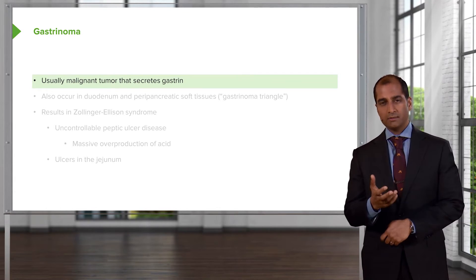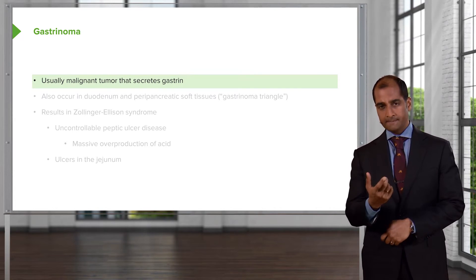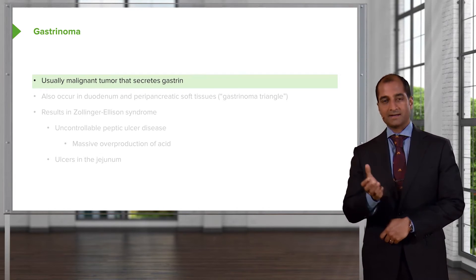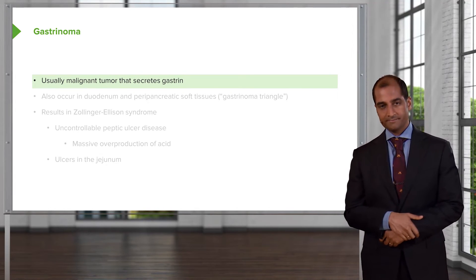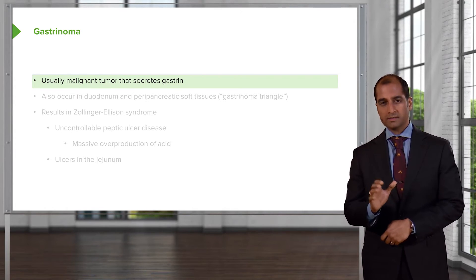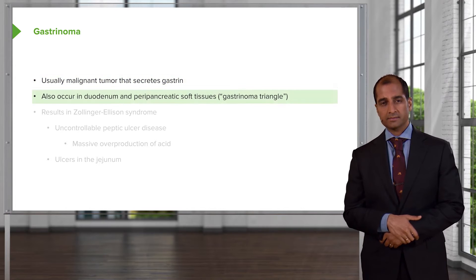So obviously the question is: how is it that we have a gastrin-producing tumor in the pancreas, when normally gastrin should be produced in the stomach? Because this is a malignant cancer. Whenever you have malignancy, understand that the cancer can do whatever it wants, wherever it wants to go — here it chooses peculiarly to be in the pancreas.